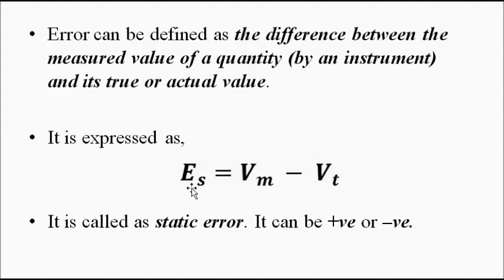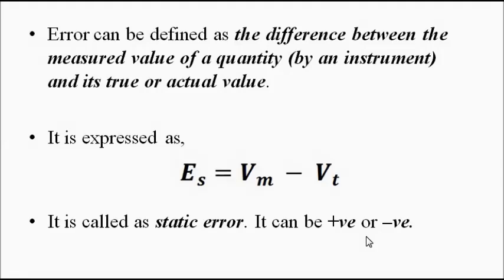This is expressed as static error. When we talk about error it is mostly static error — more than 80% of the time. Dynamic error comes into play in control systems, process dynamics, and industrial instrumentation. In electrical and electronics measurement we mostly discuss static error. Static error (subscript s) is the difference between the measured value Vm and the true value Vt, and it can be positive or negative.